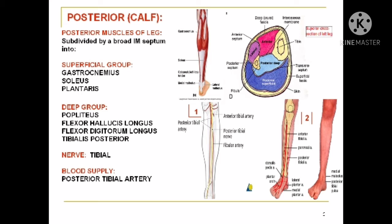The superficial group includes the gastrocnemius muscle and the soleus muscle, and the plantaris muscle. The deep group contains the popliteus, flexor hallucis longus, flexor digitorum longus, and tibialis posterior muscle.